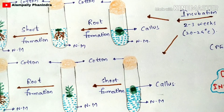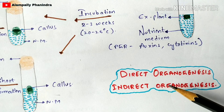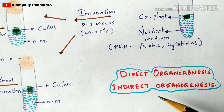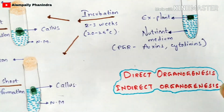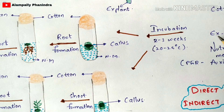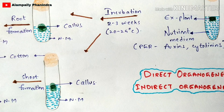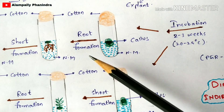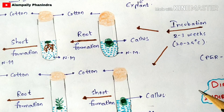There are two types of organogenesis: direct organogenesis and indirect organogenesis. In direct organogenesis, no callus is formed — the explant is directly cultured to form a new plant without callus formation. In indirect organogenesis, the explant first develops into callus, and then the callus undergoes root and shoot formation to develop into a complete plant. This is the main difference between direct and indirect organogenesis.